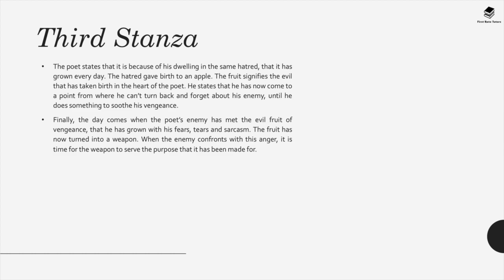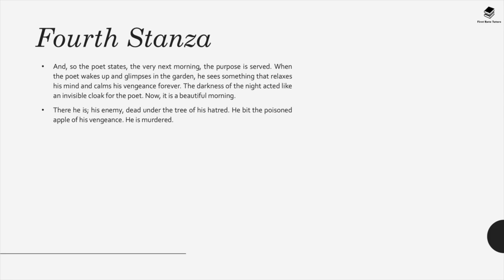The enemy meets the evil fruit of vengeance — fears, tears, and sarcasm have turned the fruit into a weapon. In the fourth stanza, when the speaker wakes up and glimpses the garden, he sees something that relaxes his mind and calms the vengeance forever. There, lying under the tree of his hatred, is his enemy, dead — he bit the poisoned apple of the speaker's vengeance. In other words, he was murdered.